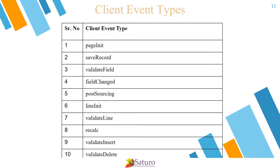Client Event Types. In NetSuite, a client script can execute on 10 different client-side events. These events can occur whenever a user loads a NetSuite form into the browser, or when a user selects a field or a field is updated. A field update can occur when a user updates a field, or when a field is auto-populated through a sourcing relationship with another field. A NetSuite event can also occur when a user clicks the submit or save button on the NetSuite page.